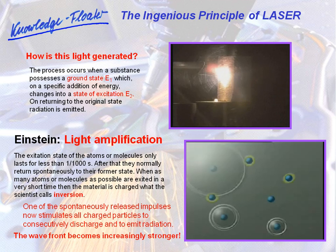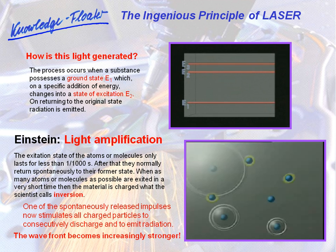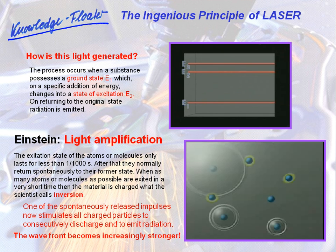How is this light generated? Research has identified numerous substances that generate laser light. The process occurs when the substance possesses a ground state, E1, which, on a specific addition of energy, changes into a state of excitation, E2 — for instance, by lifting up an electron. On returning to the original state, radiation is emitted. This transition scheme is the physical foundation of all lasers.